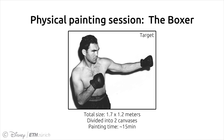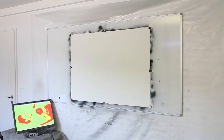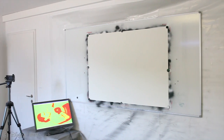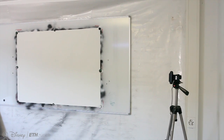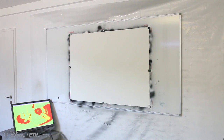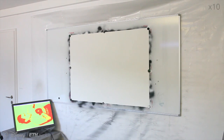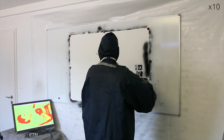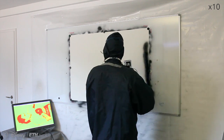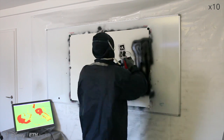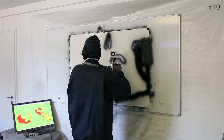Here we show a typical painting session with our system. We have broken this boxer image into two large sheets of paper. Two calibrated webcams on either side of the user track the position of the spray can relative to the canvas in real-time. Our optimization determines when to trigger the paint spray also in real-time.